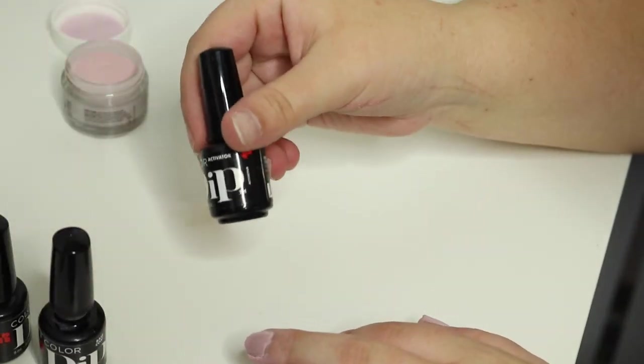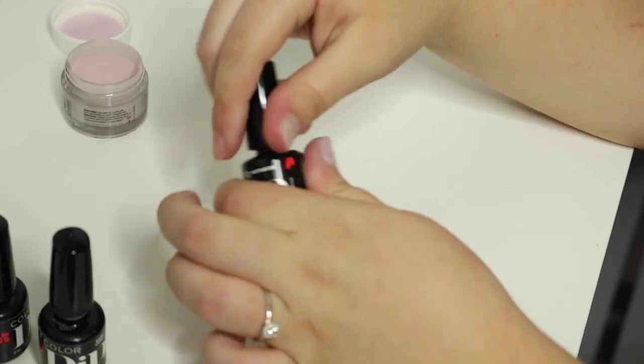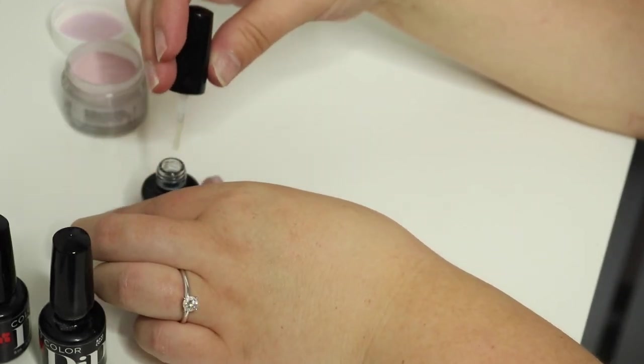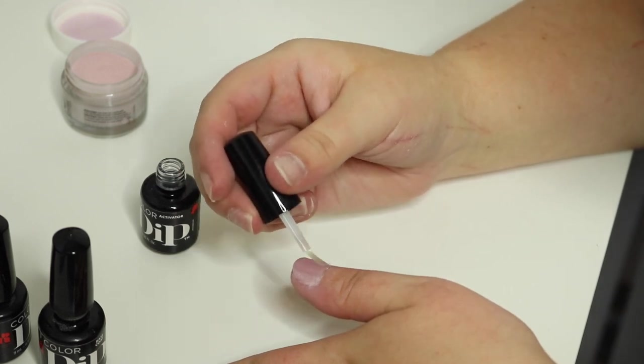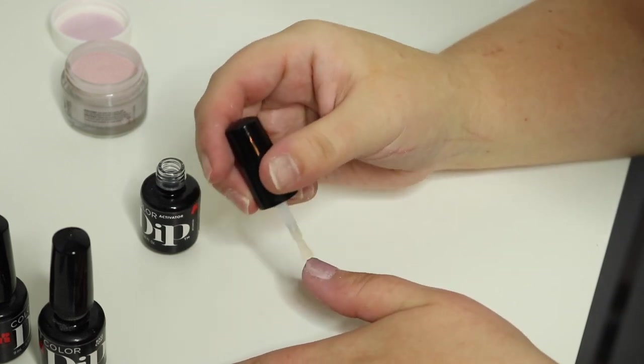So now we're going to put a coat of the activator on. This will kind of give it a matte nail polish look.